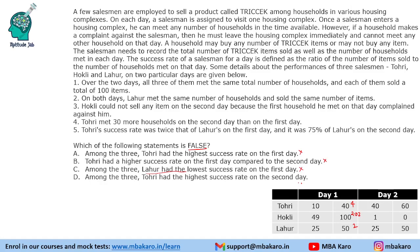The answer must be the fourth option. Checking: Tohuri had the highest success rate on the second day. On Day 2, Tohuri has a success rate of 1.5, Hockley has 0, and Lahur has 2. So Tohuri does not have the highest success rate on the second day — this statement is false. That was the solution to the set and the answers to all the questions.